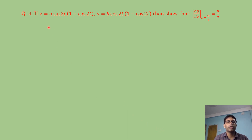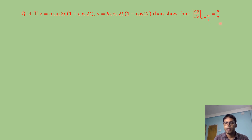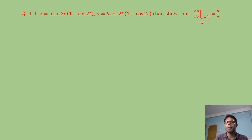Question 14: x = a·sin2t·(1+cos2t), y = b·cos2t·(1−cos2t). Show that dy/dx at t = π/4 equals b/a. We must first find dy/dx in terms of t, then substitute t = π/4.